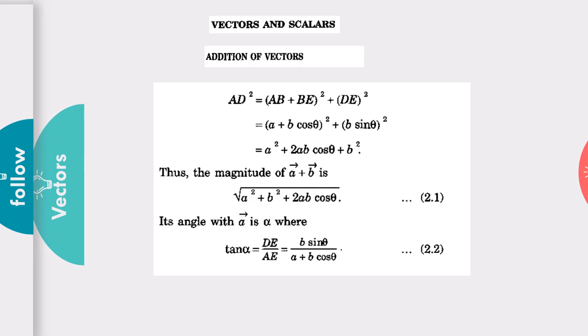The alpha that we were discussing, the angle between the resultant vector and the remaining vector, can be received by tangent of alpha. Tangent α = DB/AE, where D is b sin θ and A is a + b cos θ. By taking the inverse, α = tan⁻¹(b sin θ / (a + b cos θ)).